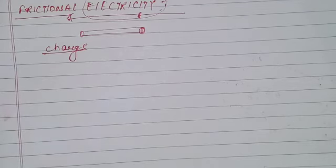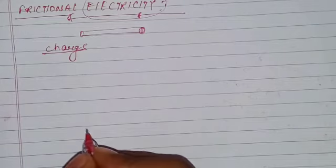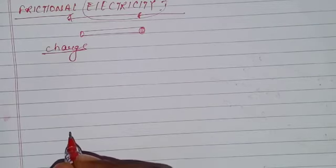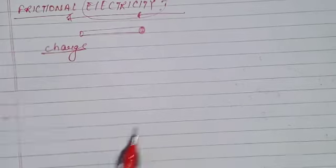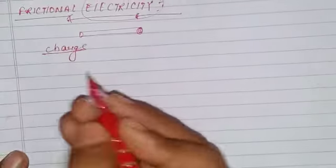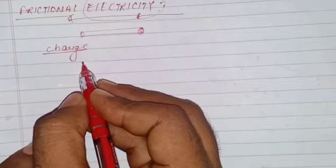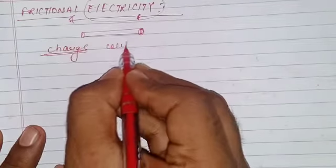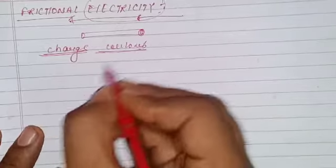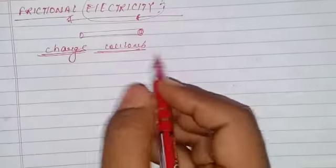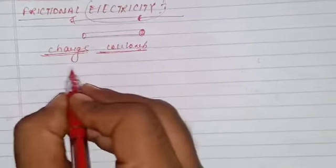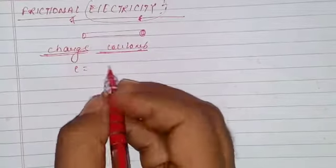The definition is: electric charge is an intrinsic property of the elementary particles of matter which gives rise to electric force between various objects. The SI unit of electric charge is the coulomb (C), named after a scientist.